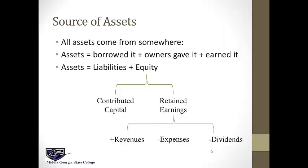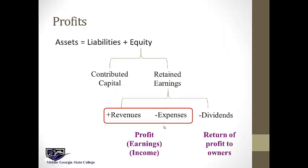Under retained earnings, revenues less expenses is the profit, or earnings, or income — these three words are used interchangeably and all mean the net of revenues less expenses. Dividends are not part of the calculation of profit, earnings, or income; dividends are a return of profits to the owners.